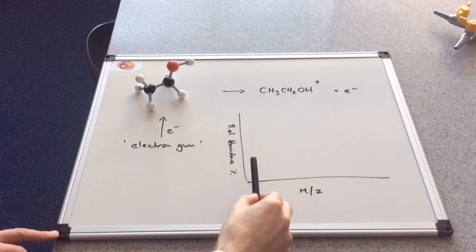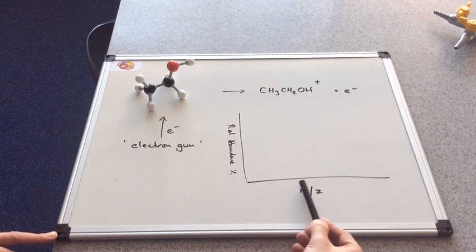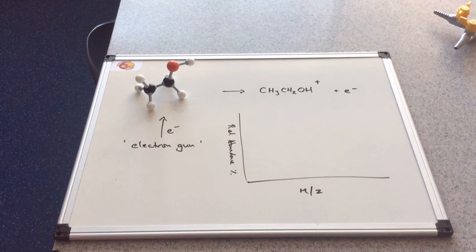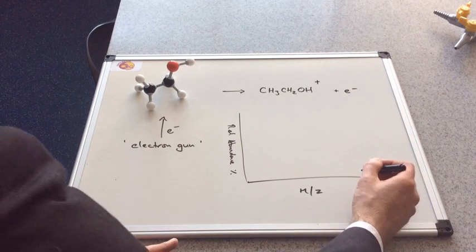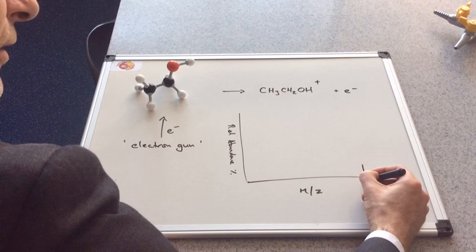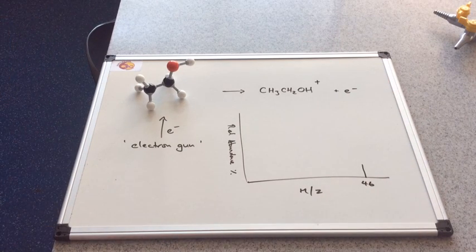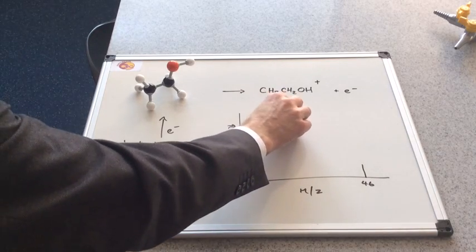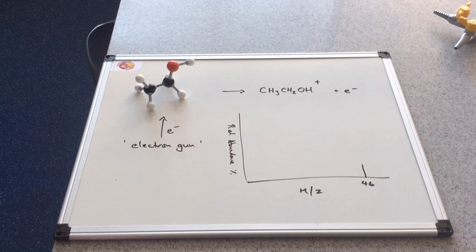I've drawn up some axes now. We have the mass-to-charge ratio running along the x-axis, and the y-axis is just as before the relative abundance. We would expect to see, in the mass spectrum of ethanol, a peak at 46. Why 46? Because the mass of two carbons, three, four, five, six hydrogens, and an oxygen is, of course, 46.